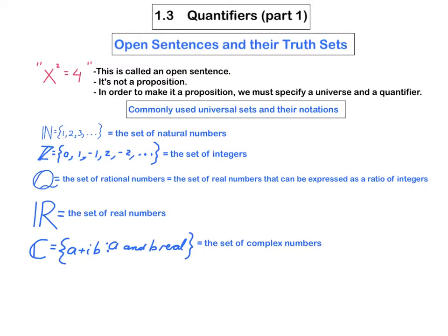So here are some commonly used universal sets and the notations that you'll find in most math books. This is the set of natural numbers, this is the set of integers, the set of rational numbers, which is the set of real numbers that can be expressed as a ratio of integers. R denotes the set of real numbers and C the set of complex numbers. You'll notice for each of these that we have this extra little line that appears somewhere in the notation, and that's pretty commonly used by most mathematicians. So you should use that notation as well.